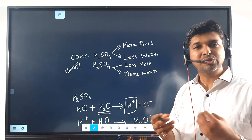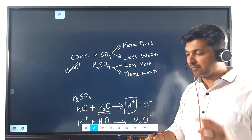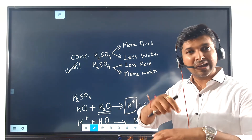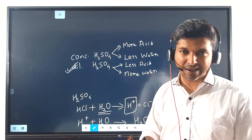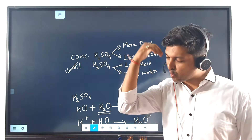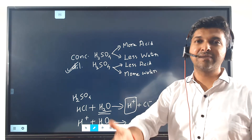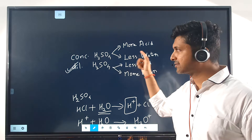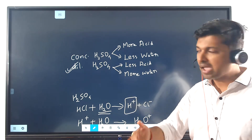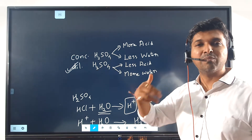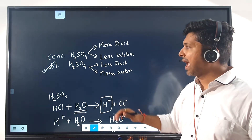When concentrated H2SO4 has less water, it is not able to dissociate completely and cannot release as many H+ ions. Therefore, concentrated H2SO4 is less acidic. Corrosiveness is different from the strength of an acid. Concentrated H2SO4 is no doubt more corrosive, but it is not more acidic, because acidity is determined by the number of H+ ions, and that number is greater in dilute H2SO4.